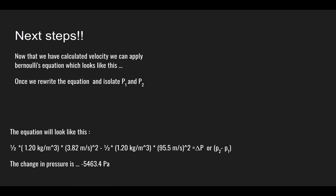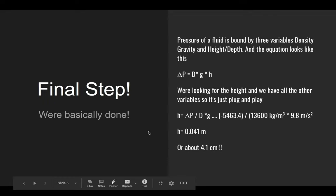So the final step with this new number that you got at 5,463.4 Pascals, that's the pressure value. You could plug it into this equation. So the change in pressure is equal to the density times gravity times the height. And this density applies to the density of the fluid. In this case, it's mercury.